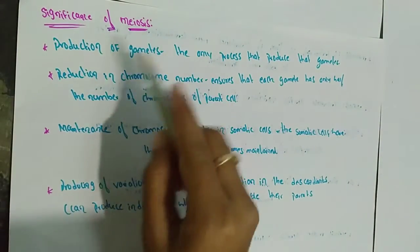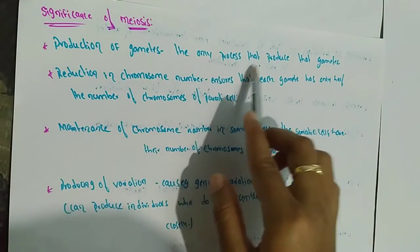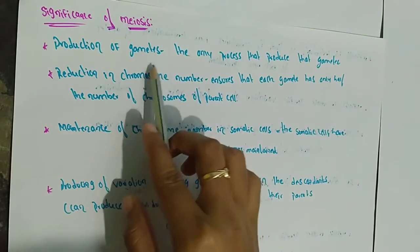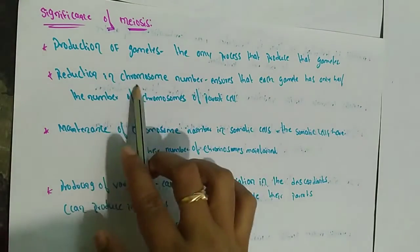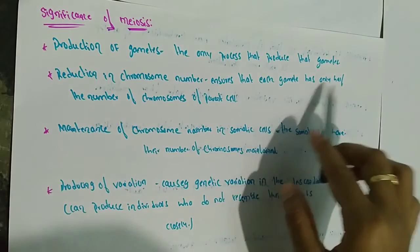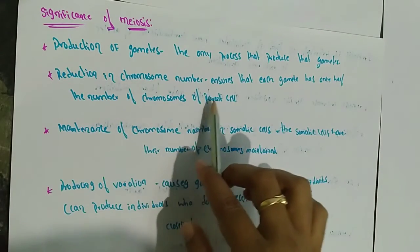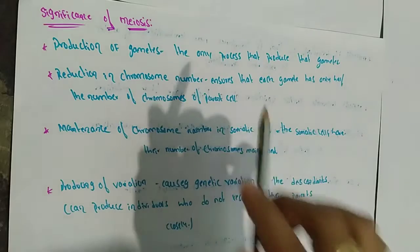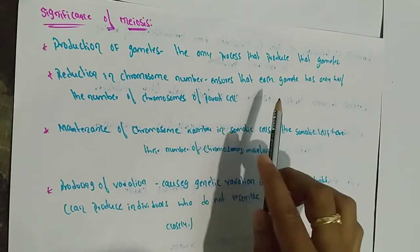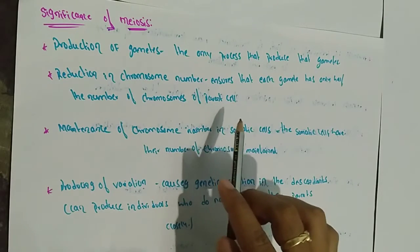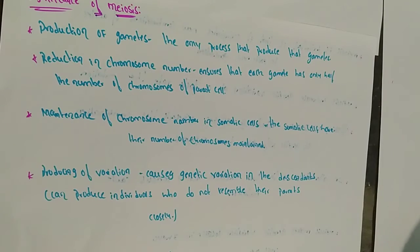Significance of meiosis. Production of gametes — meiosis is the only process that produces gametes, which are sex cells. Reduction in chromosome number ensures that each gamete has only half the number of chromosomes of the parent cell.